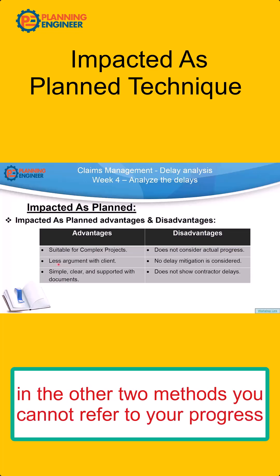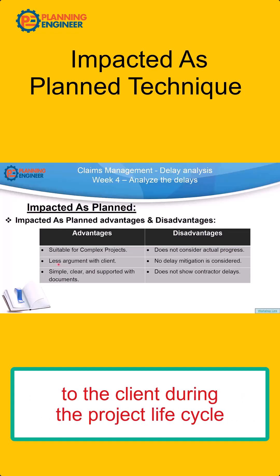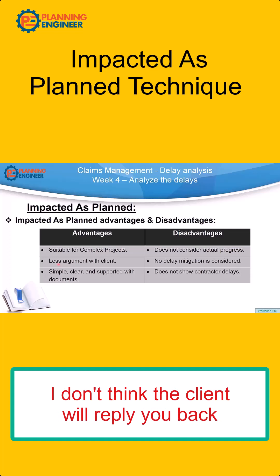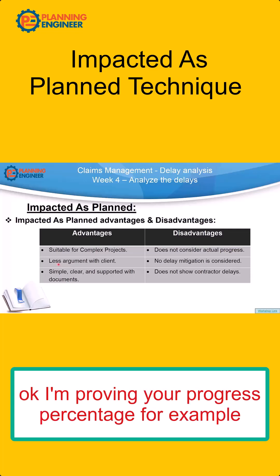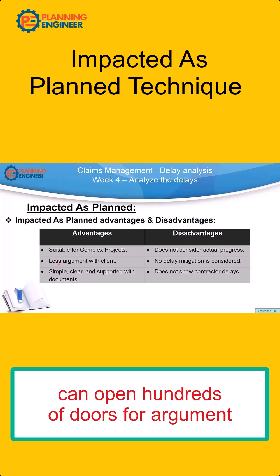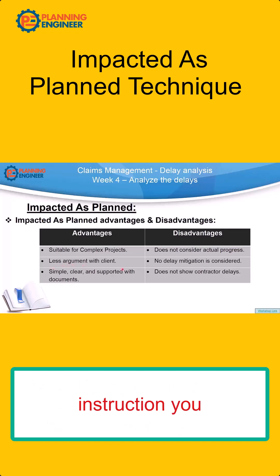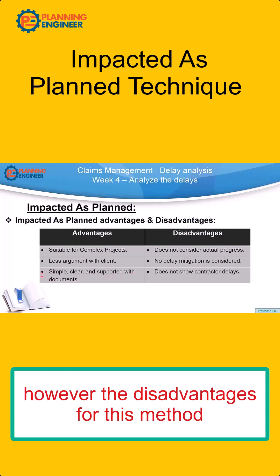The events are based on official correspondences between you and the client, so everything here has a reference. In the other two methods, you cannot refer to your progress because your progress is not an official document. If you submitted progress during the project lifecycle, the client could argue — for example, saying you finished only 40% of an activity instead of 50%. This opens hundreds of doors for argument. So, Impacted as Planned is simple, clear, and supported with documents.